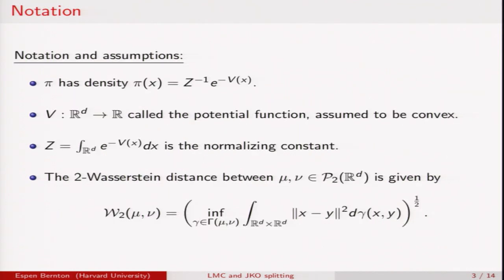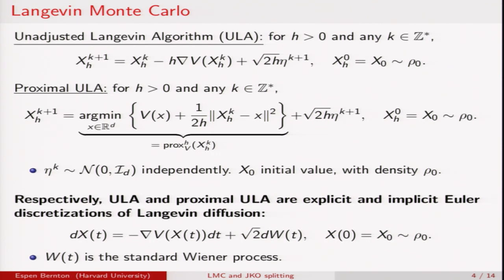Here's some notation. I'll assume that pi has density expressed in terms of this potential function V which is assumed to be convex. Unadjusted Langevin is an MCMC algorithm where the next iterate of your chain is constructed by taking a step in the direction of the negative gradient from where we are now and then adding noise with variance scaled to the step size.